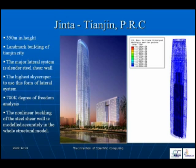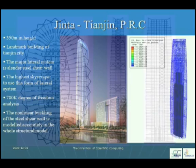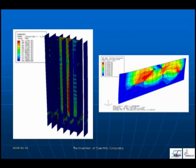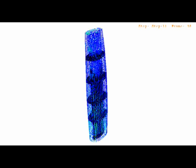The next project is Jinta in Tianjin, which is 350 meters high. The major lateral system is slender steel shear walls — the tallest skyscraper to use this form of lateral system. About 700,000 degrees of freedom are used. The nonlinear buckling of the steel shear wall is modeled accurately in the whole structural model. The simulation shows the steel shear walls going into plastic and buckling under rare earthquake conditions. The building has four outrigger stories.